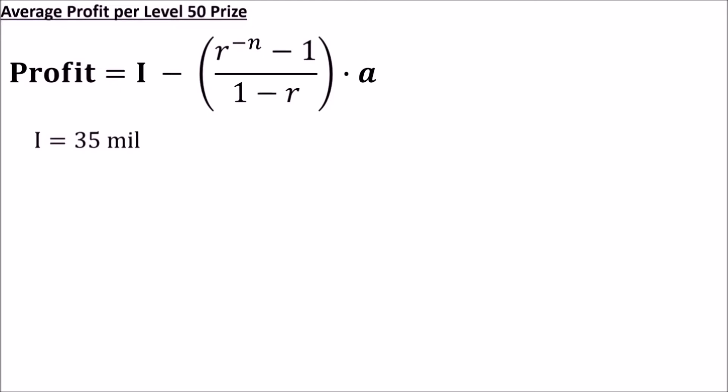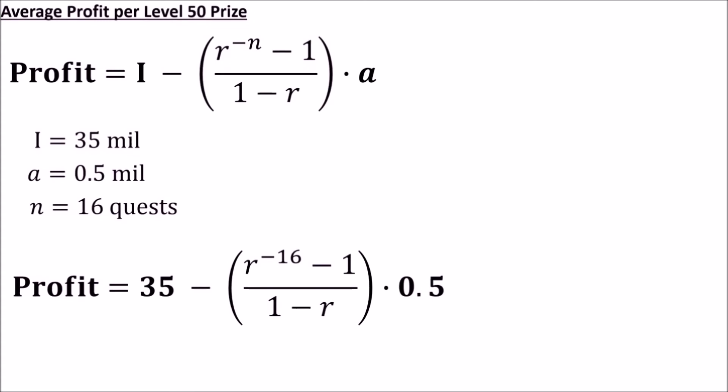Currently, Illusion staffs are worth about 35 mil. I'm going to estimate an average cost of 500k for rarity 99s. Notice that I'm writing it in terms of millions to keep our units consistent, and we need to complete 16 quests in a row. This equation lets us plug in a value for the completeness of our collection and spits out the average profit we should expect from each Illusion staff.